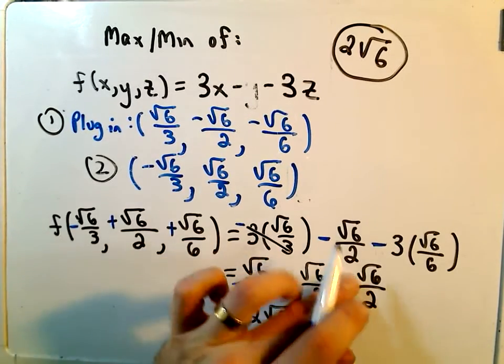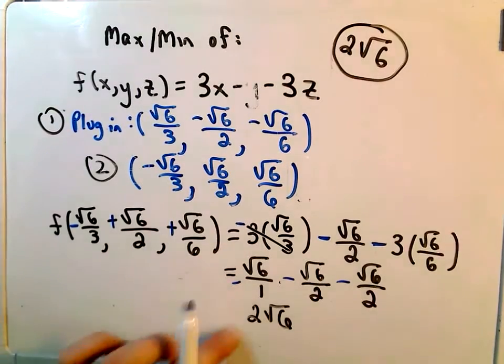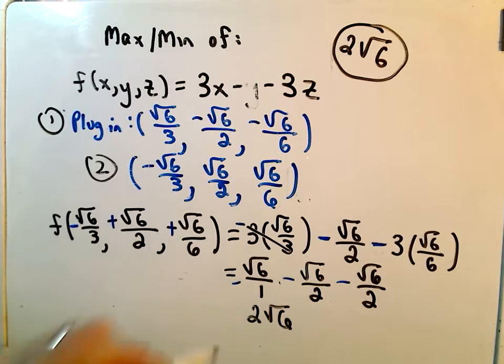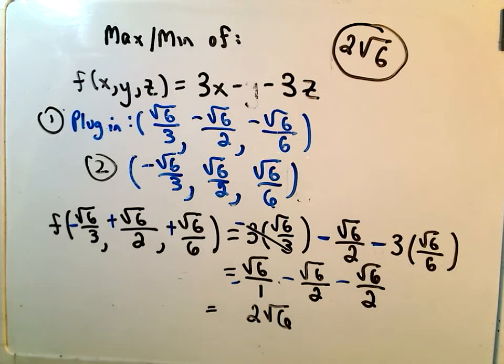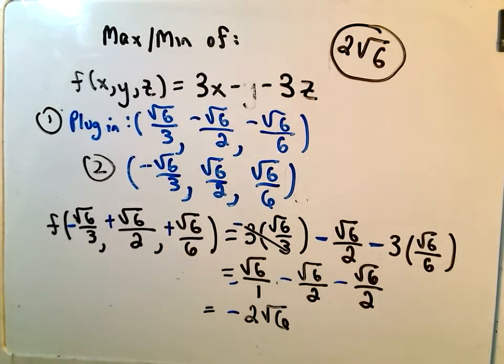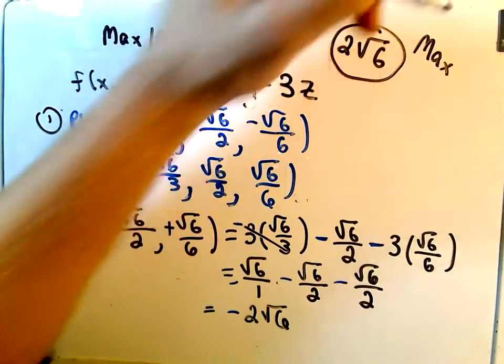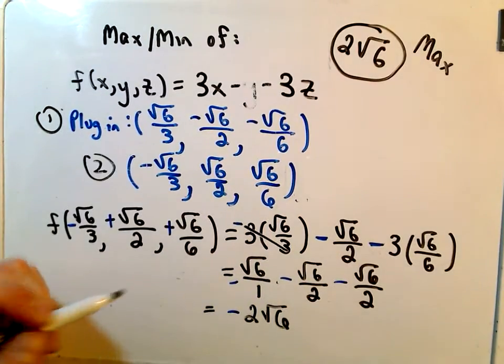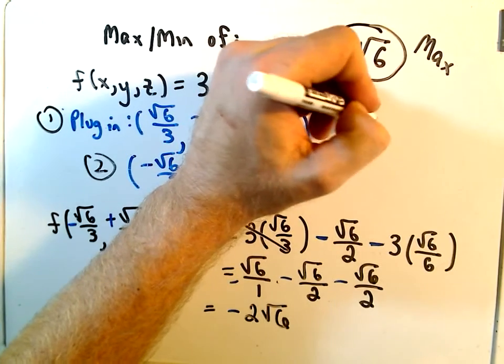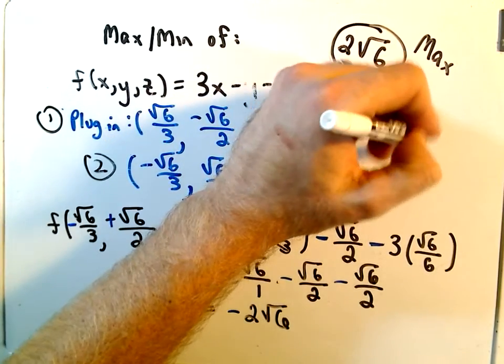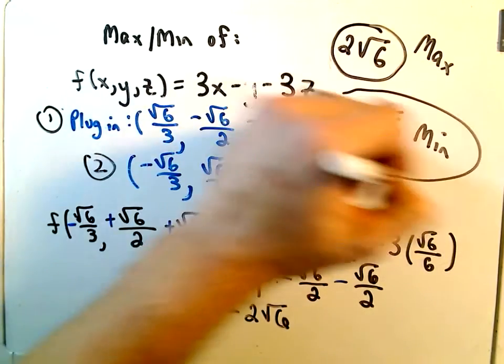So you can check my arithmetic here. And instead of getting positive 2 square root of 6, we're going to get negative 2 square root of 6. So it looks like, in this case, our maximum value of that original function, subject to those constraints, is going to be 2 root 6, and the minimum value is going to be negative 2 square root of 6.